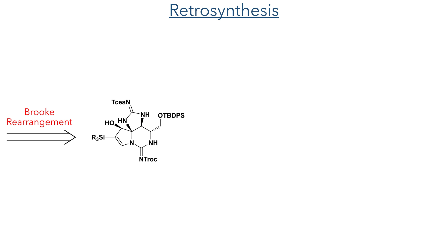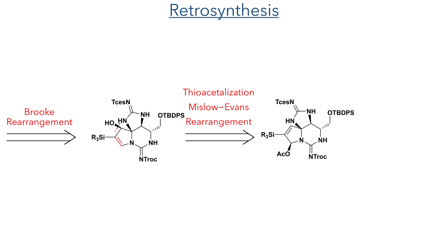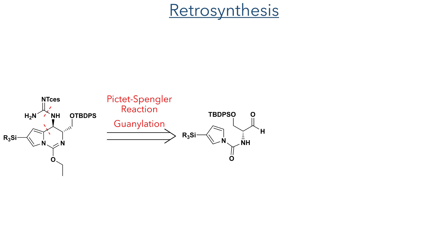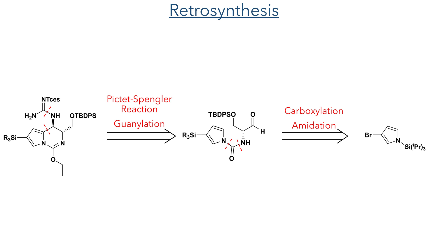This ketone will be introduced using a Brook rearrangement triggered by the oxidation of a silyl group. The precursor for this reaction could be generated using a Mislow-Evans rearrangement, following the necessary thioacetylisation and oxidation. To introduce the acetate group necessary to form the key nitrogen-carbon bond to complete the five-membered guanidine ring, they could use an oxidative de-aromatisation reaction of a substituted pyrrole. This pyrrole will be functionalised using a Pictet-Spengler reaction, with the guanidine group introduced using simple substitution chemistry. The urea precursor could be synthesised from a simple brominated pyrrole using carboxylation and amidation chemistry using a serine derivative.